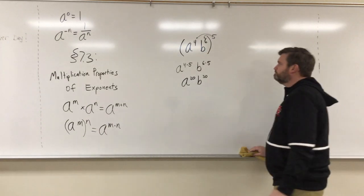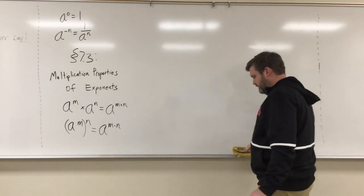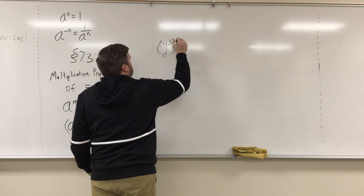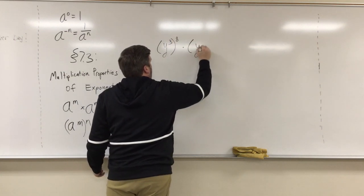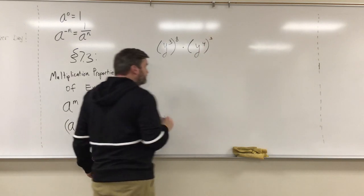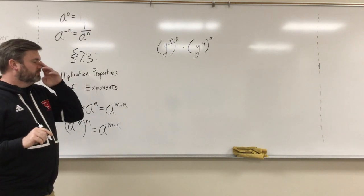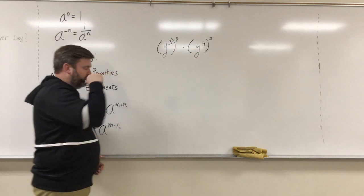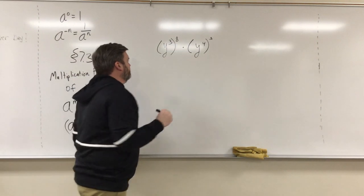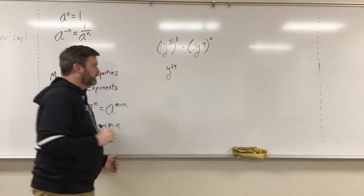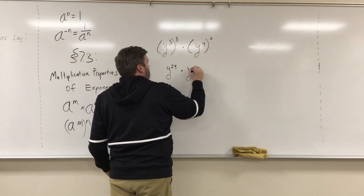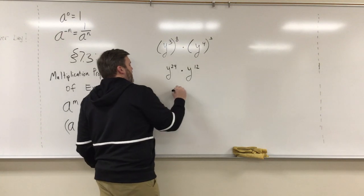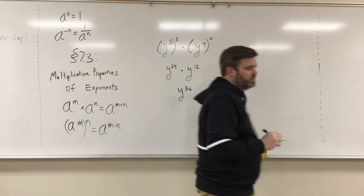Let's do (y cubed) to the eighth times (y to the fourth) to the third. We want to take that expression and simplify it, so we'll start out by using our power-to-a-power rule. Three times eight gives us y to the 24th, and four times three gives us y to the 12th. Now we use the multiply-like-bases rule — keep the base and add — and that simplifies to y to the 36th power.